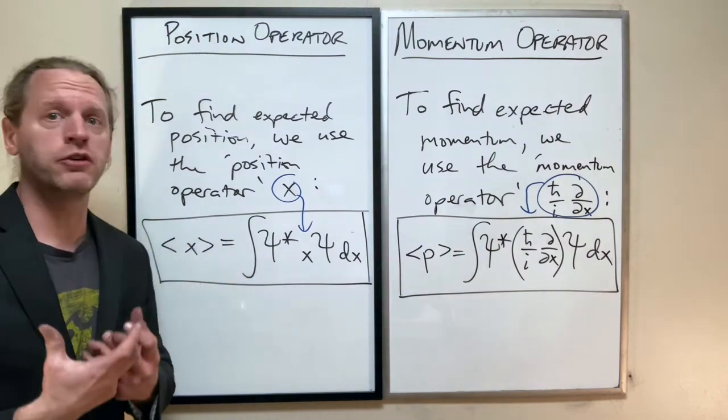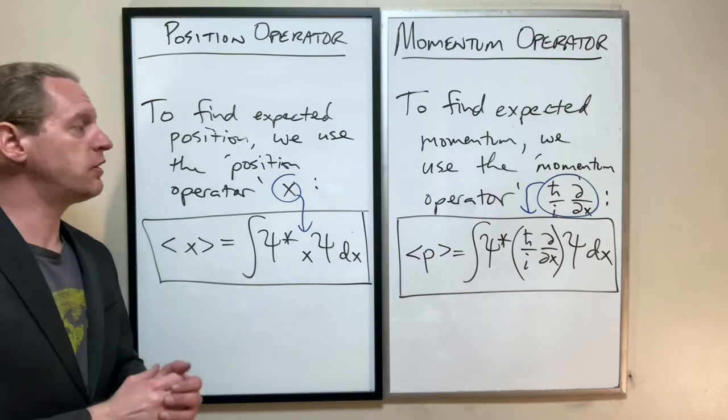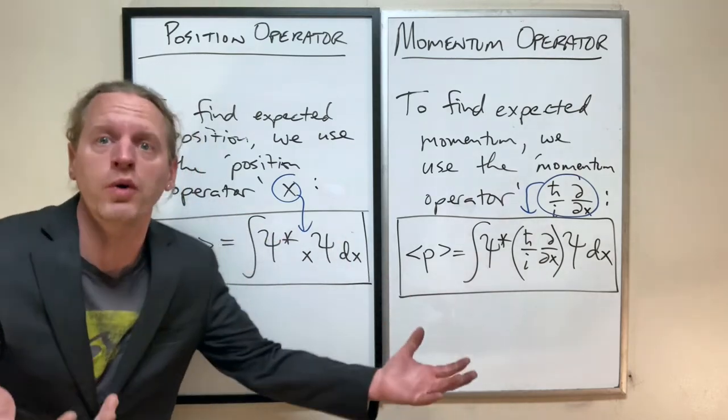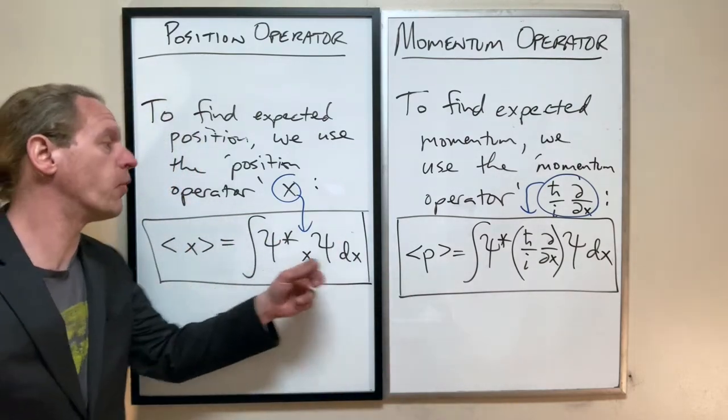And then once we introduce what we call the Hamiltonian, which is the combined energy or the total energy, it encompasses both of these things.